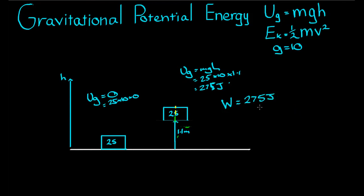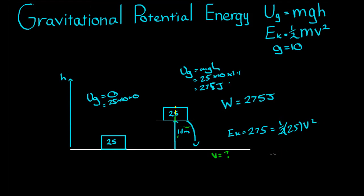That's joules — not newtons, joules. Now, if we drop the box from this height, let's figure out the velocity of the TV once it hits the ground. If it really does have 275 joules of gravitational potential energy at 1.1 meters, then by the time it hits the ground it will have 275 joules of kinetic energy. So KE = 275 = ½mv² = ½ × 25 × v². Solving: v = √(2 × 275 / 25) ≈ 4.7 meters per second.